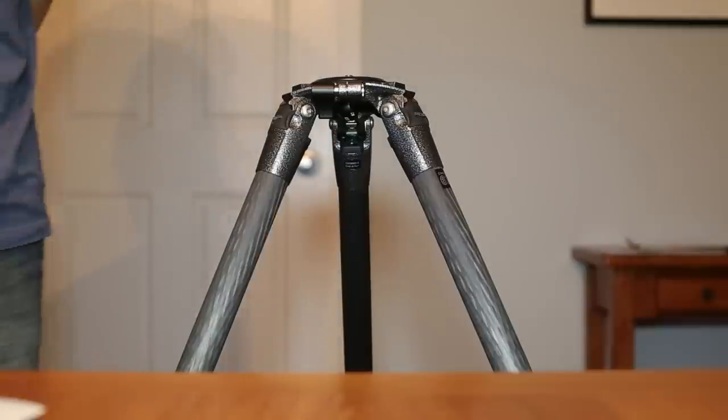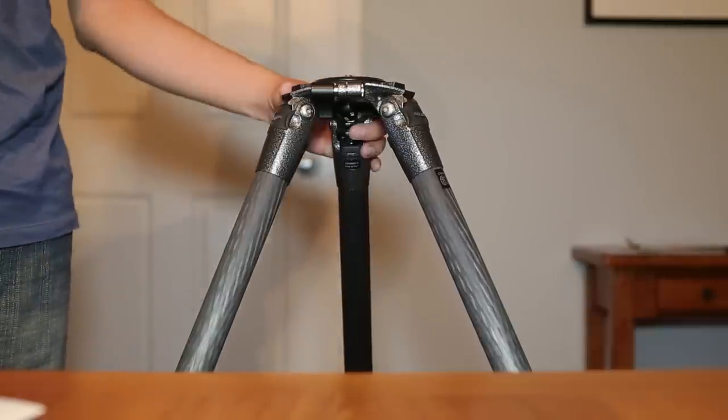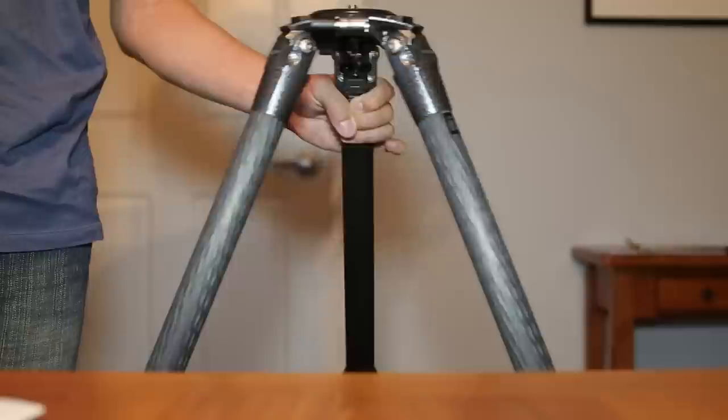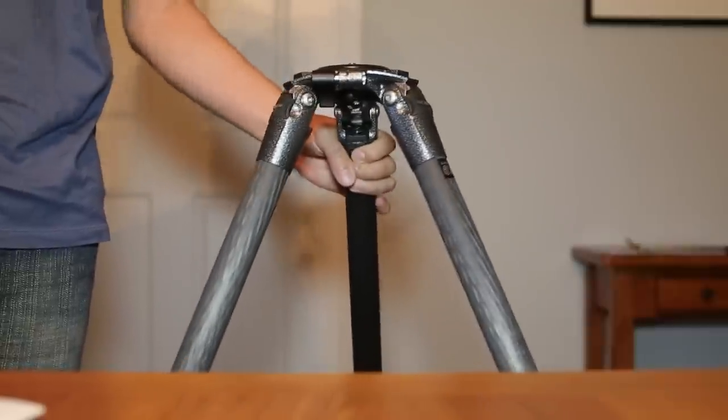If it wasn't tight and you weren't careful about that, your gear could actually fall out. If you were holding the tripod over your shoulder or something like that, it would actually work its way loose.